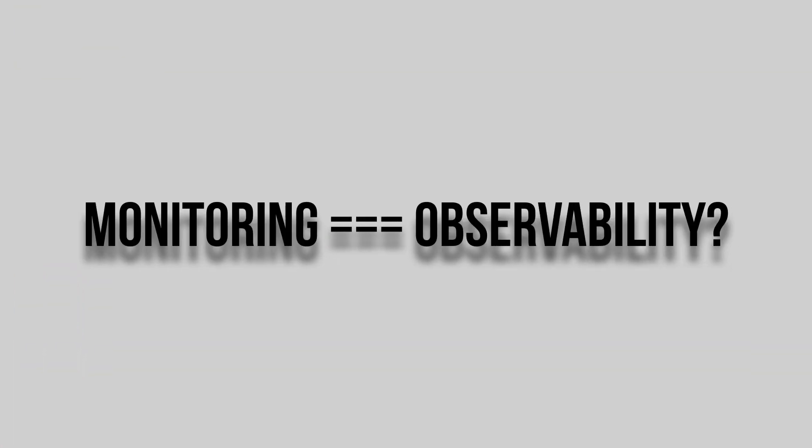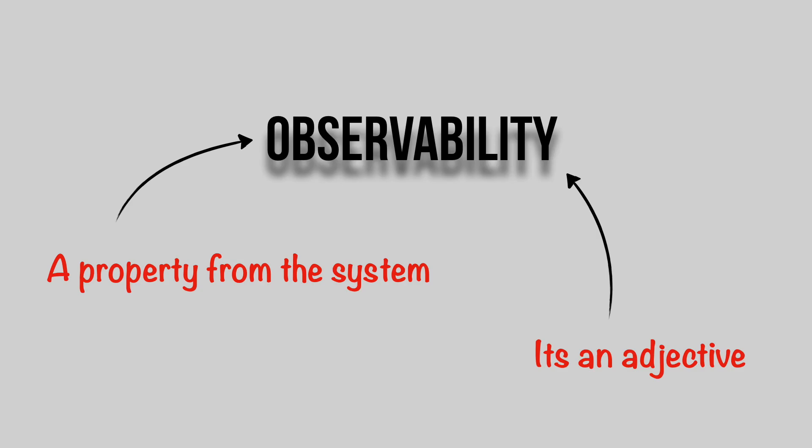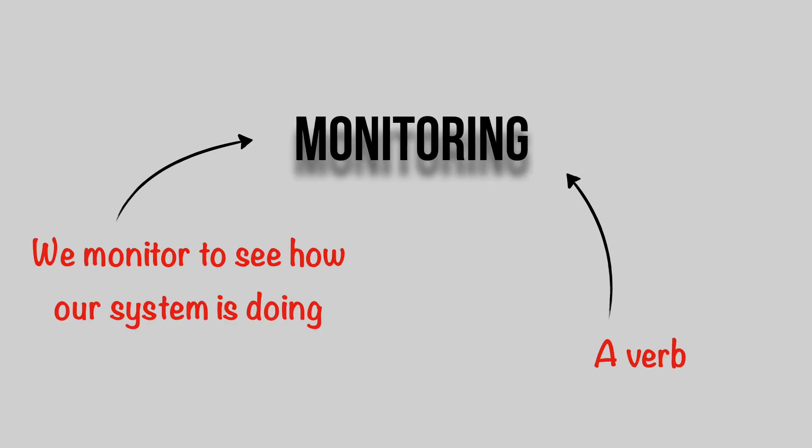Let's start with the first question: is monitoring the same as observability? Observability is a word with a lot of hype, so it's good to understand what both terms mean. A system is observable — that's an adjective, a property of the system. A system is observable when we can infer the internal states of a system by the knowledge of its external output. Monitoring, on the other hand, is a verb — we monitor a system to see how it's doing, to know its state.